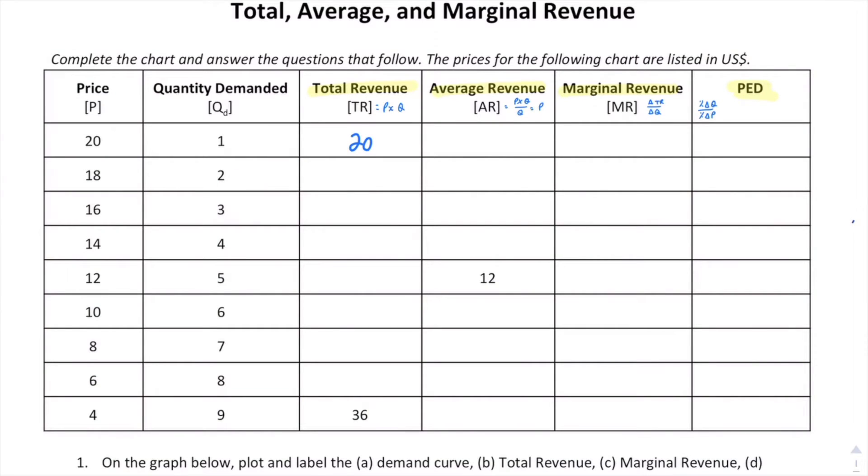At our first level of output, total revenue price times quantity is 20 times 1 which is 20. Average revenue here is always going to be price which is 20. And marginal revenue is the change from 0 to 20 which is 20. In the second set you can see the math here follows through. Total revenue is 36. Average revenue is again just 18. Marginal revenue now is going to be 16. And we get a PED calculation of 10.